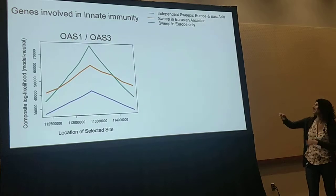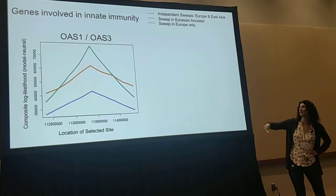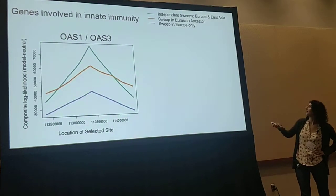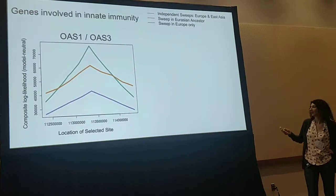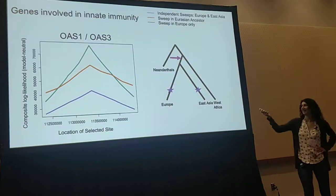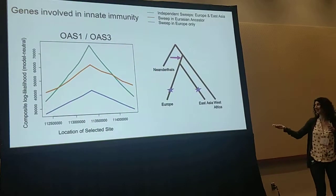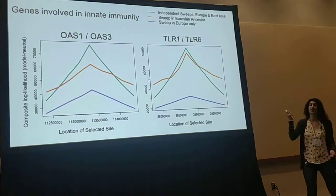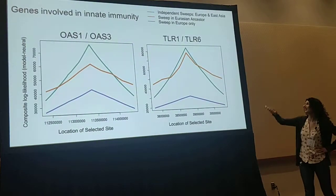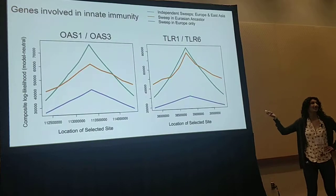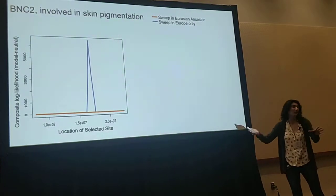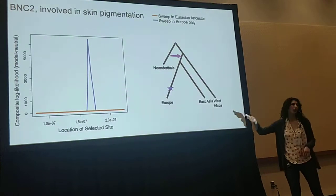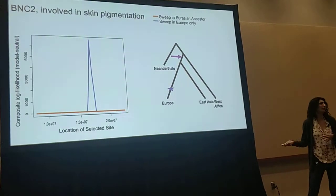All models peak at the most likely selection coefficient, and the most likely model is that of independent sweeps in Europe and East Asia. So it seems like in this case it was independently beneficial in each of these populations after they split. For another gene involved in innate immunity, we see the same thing — independent selection in both populations. For BNC2, a skin pigmentation gene, what we find is selection that only occurs in Europe, which is not very surprising because it's at very low frequency in East Asians.